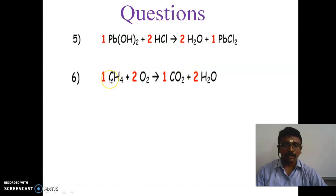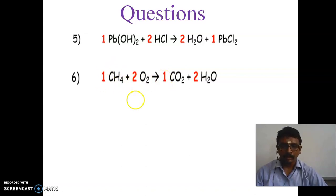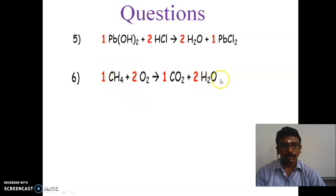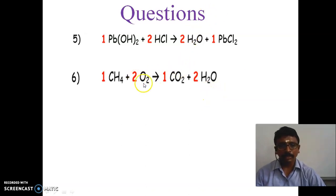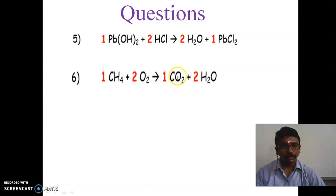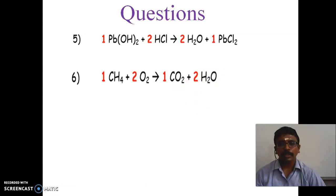Carbon C has 1 atom on each side. Hydrogen: 1×4=4 in the reactant, and 2 molecules of H2O gives 2×2=4 in the product. Oxygen: 2 O2 gives 4 atoms on the left. In the product, CO2 has 2 oxygen atoms and 2 H2O has 2 oxygen atoms, so 2+2=4. So the equation is balanced.